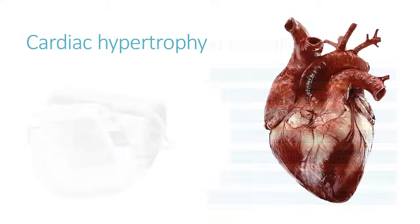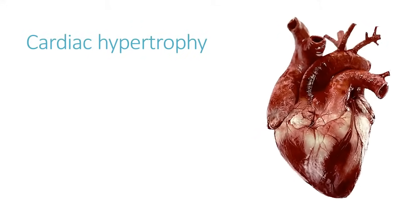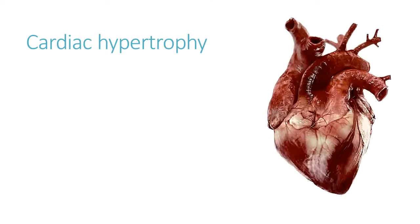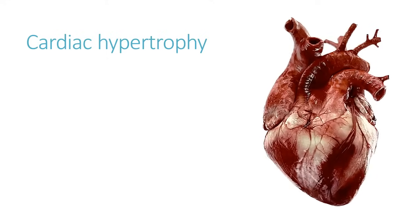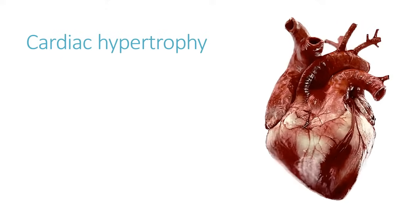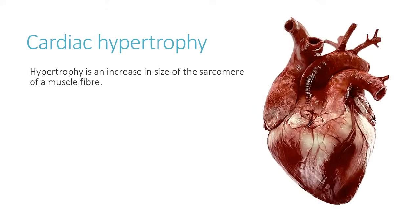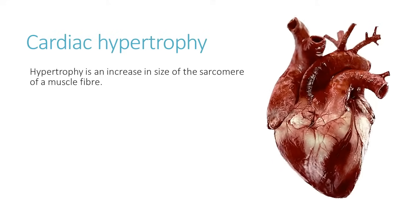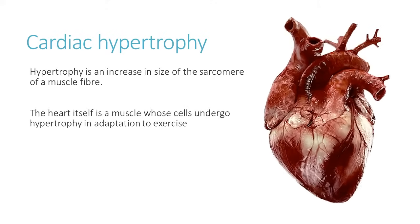Let's start with cardiac hypertrophy. Hypertrophy is an increase in the size of the muscle — specifically, an increase in the size of the sarcomere, which is one of the subunits of the muscle fibre, where you have the actin and the myosin filaments that slide past one another, as we've looked at previously. So the heart muscle itself undergoes hypertrophy. When we exercise and stress the muscle, it responds by growing stronger and larger.